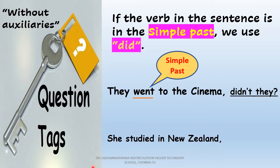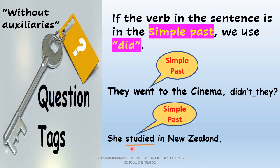Look at another example: 'She studied in New Zealand.' Here again there is no auxiliary verb, so check the main verb — 'studied,' which is in simple past tense. If the sentence is in past tense without any auxiliary verb, we use 'did' in the question tag. As the sentence is positive, we use the contracted form of 'not,' followed by the subject pronoun 'she': 'didn't she?'